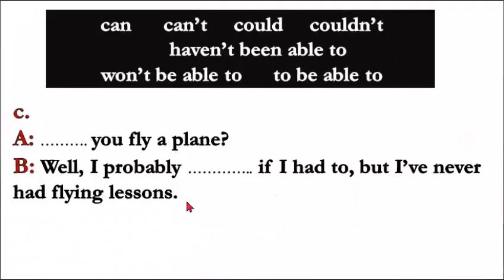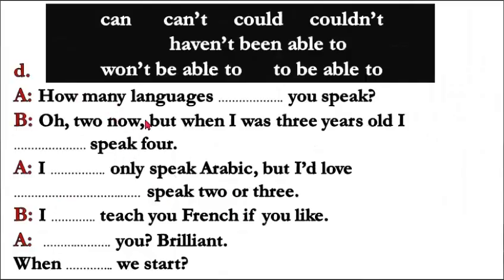'Can you fly a plane?' — still talking about general ability. 'Well, I probably could if I had to, but I've never had flying lessons.' Next: 'How many languages can you speak?' — general ability. 'Oh, two now, but when I was three years old I could speak four' — 'could' for ability in the past.